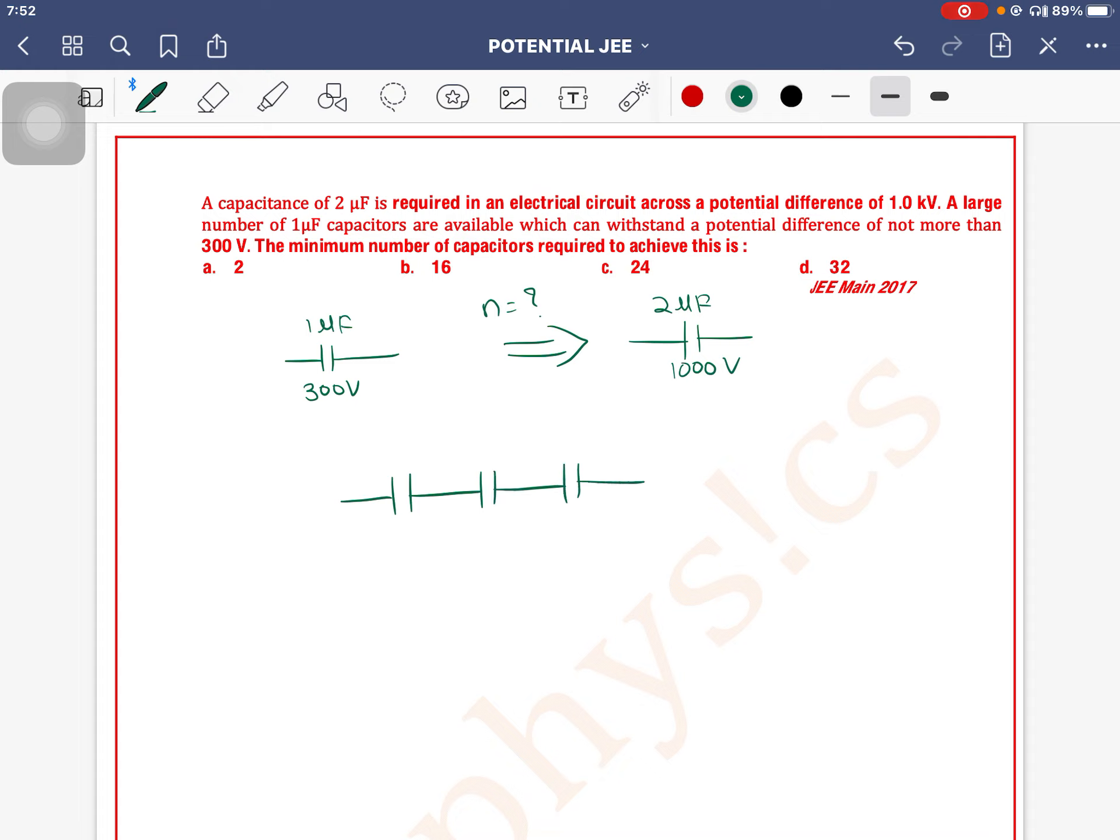To reach the required voltage, we add capacitors in series: 300V plus 300V plus 300V plus 300V. Since we need to exceed 1000V capacity, we need 4 capacitors of 1 microfarad connected in series.